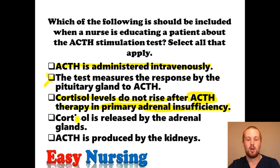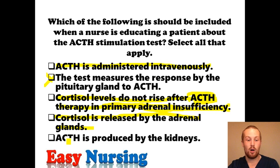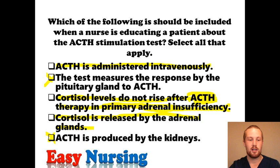Cortisol is released by the adrenal glands — that is correct. ACTH, on the other hand, is created by the pituitary gland. One answer choice states ACTH is produced by the kidneys — that is completely wrong; it is produced by the pituitary gland. So the correct answers should be one, two, and three.